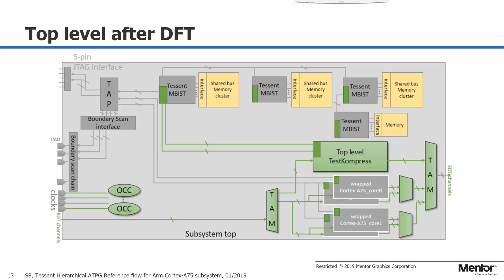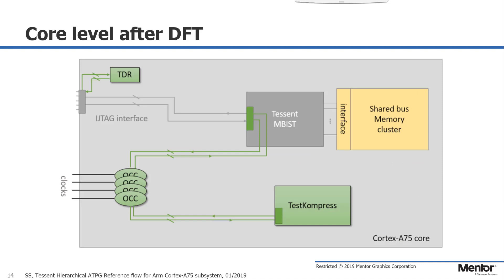Then we perform top level ATPG and the core level ATPG pattern retargeting to get the whole chip's test coverage. Please also note that Tessent never needs a full netlist for hierarchical DFT. However, it automatically tracks top-level faults and core-level faults that need to be targeted with top-level ATPG, so there will be no fault site missed. This schematic shows core level with DFT inserted. Our memory BIST can work with ARM's shared bus memory cluster, and our test compressor logic can work not just with our OCCs, but also third-party OCCs.